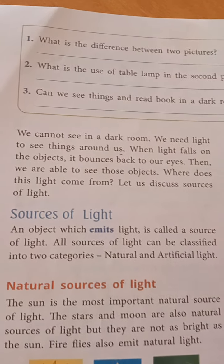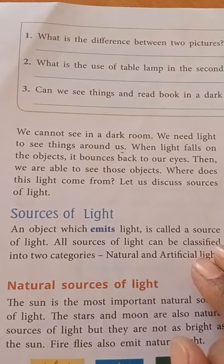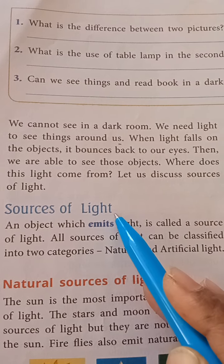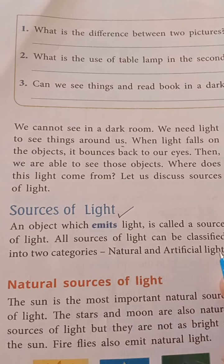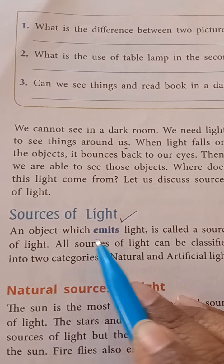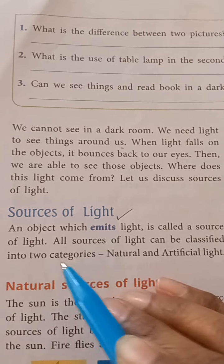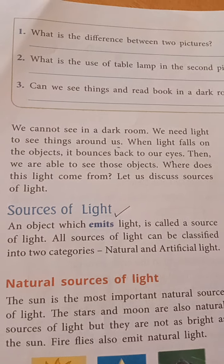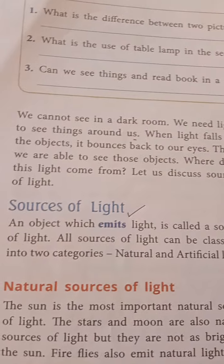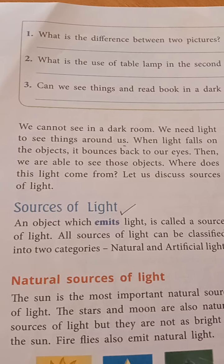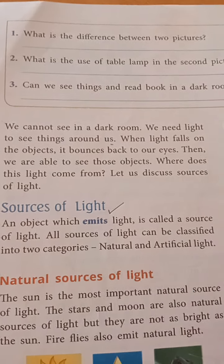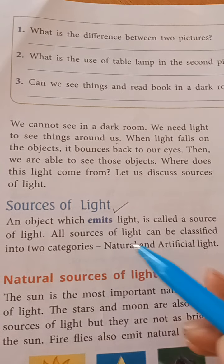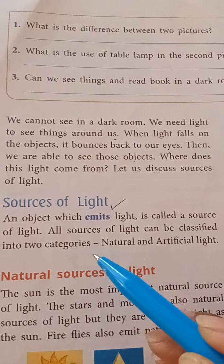So where does this light come from? Let us discuss about it. First of all, sources of light — from which the light is coming. An object which emits light is called a source of light.